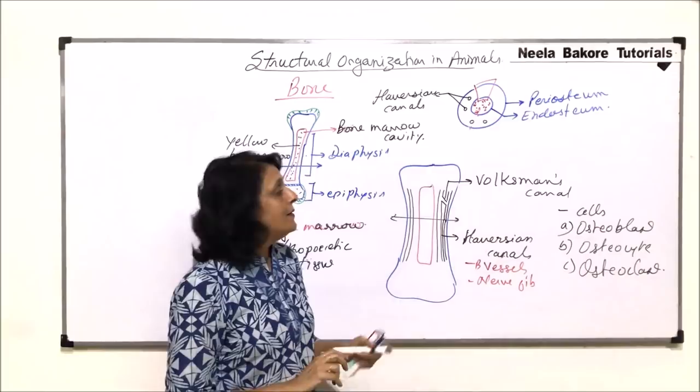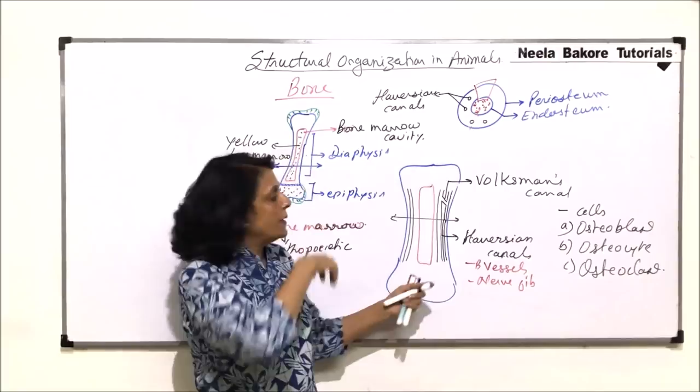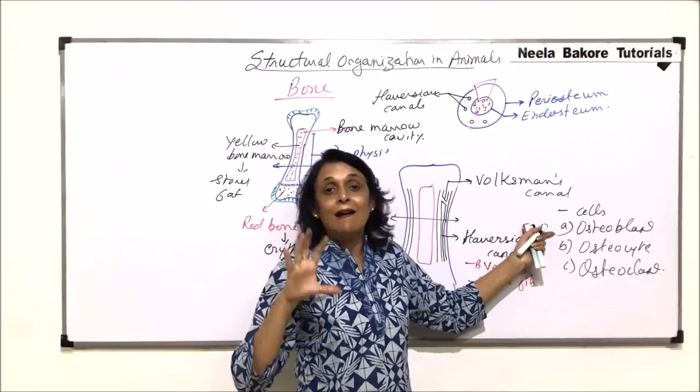We need to understand the functioning of all these cells, and then we will be able to draw them properly. Osteoblast cells, they start secreting the hard material around or in the bone.